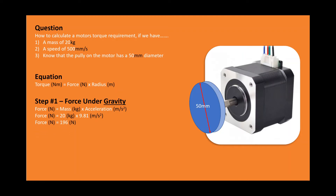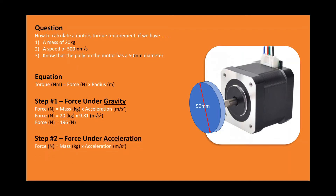The force is 196 newtons. Step two: we want to work out the force under acceleration for the 20 kilogram mass. First we need to work out the speed in meters per second. The force is 20 kilograms times 0.5 meters per second, which gives us a force under acceleration of 10 newtons. When we add these two together, we get a total of 206 newtons.